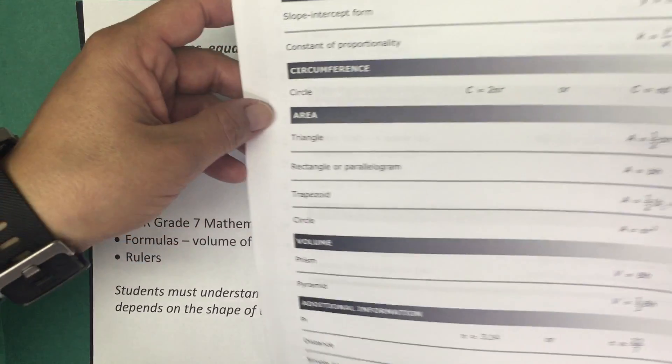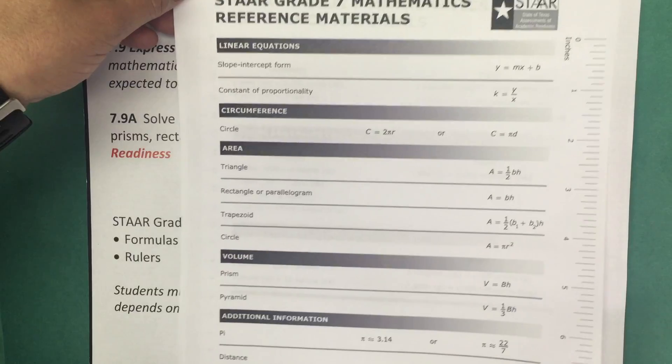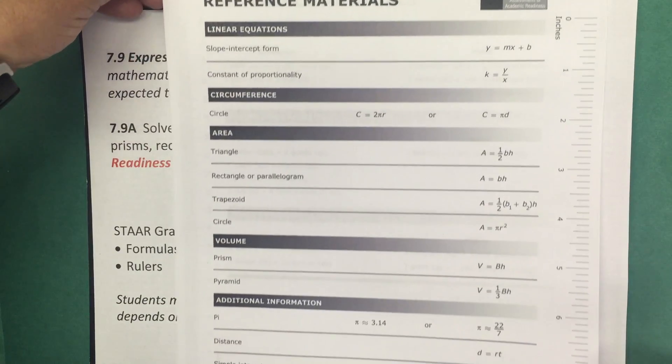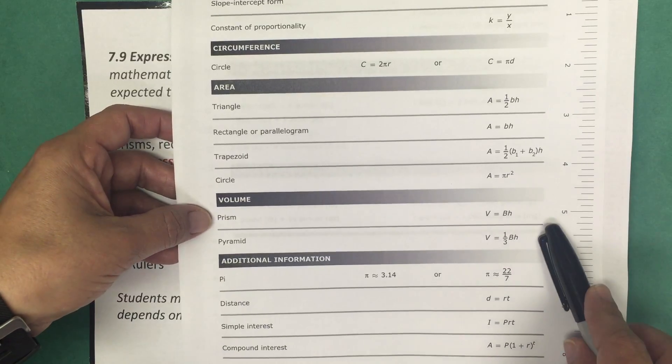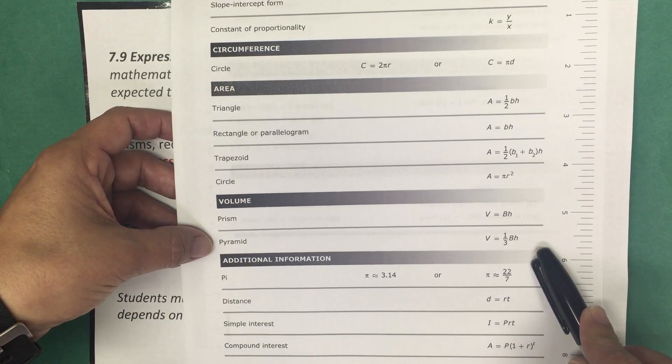Here's the seventh grade reference materials that the students are provided when they take the STAAR test, and you can see that under volume there is a formula provided for the prism and a formula provided for pyramid.